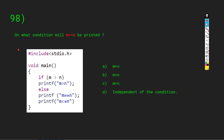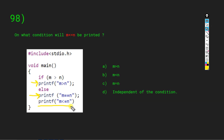On what condition will 'm less than or equal to n' be printed? We have an if-else block with three printf statements and absent curly braces. When curly braces are absent, only the next statement is the block. This printf is the if block, only this printf is the else block, and the third printf is independent of if or else. The answer is D: independent of condition.